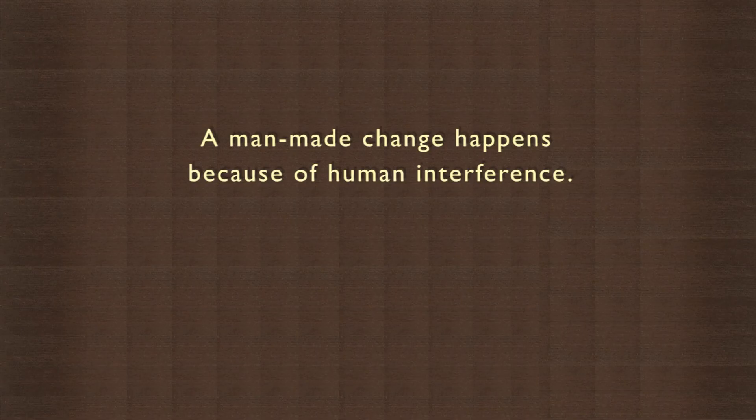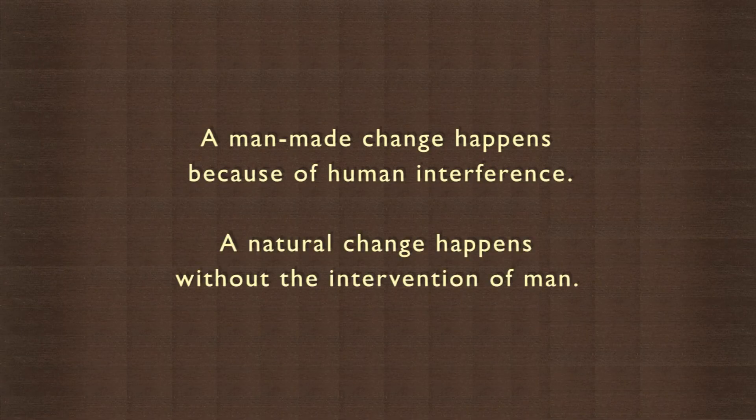A man-made change happens because of human interference, like cooking of vegetables. A natural change occurs due to natural consequences — man cannot control natural changes, for example the rising or setting of the sun. So when food gets cooked, it is a man-made change, but when fruits are ripened by leaving them out, it is a natural change.